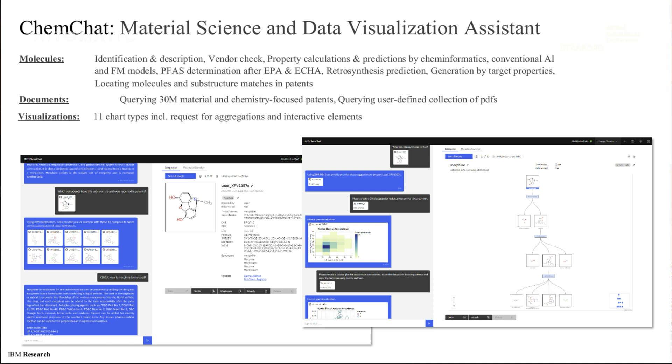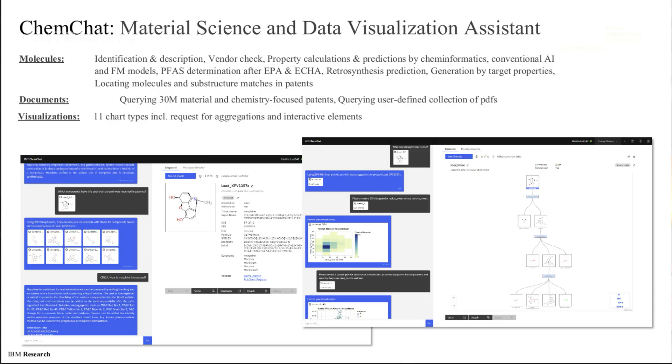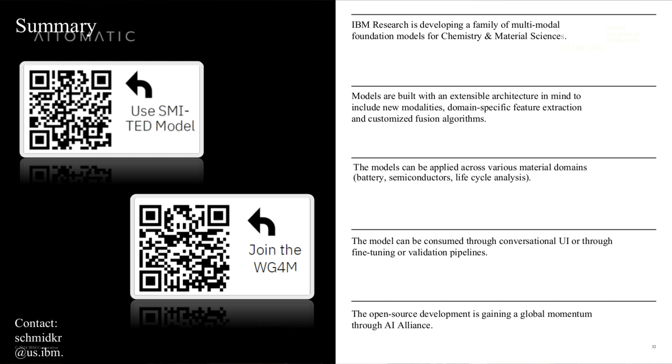Finally, we have a conversational interface designed for users who don't want to work with a Python notebook. There is a chatbot where you can ask the model to suggest candidates based on a description, ask for synthetic pathways showing how to make certain molecules, and plot data from tables generated by the models — making it easy for chemists to interact with the system. There are links for our models and our AI Alliance working group, and you can always contact me if you have questions. Thank you.